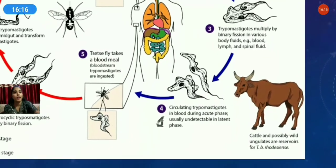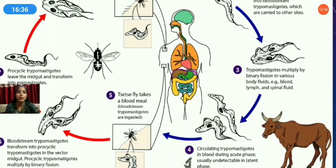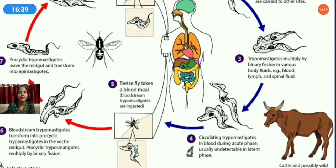Cattle and possibly wild ungulates are reservoirs for certain trypanosoma species, which also infect domestic animals. After multiplication, parasites circulate in the blood during the acute phase and are undetectable in the latent phase.